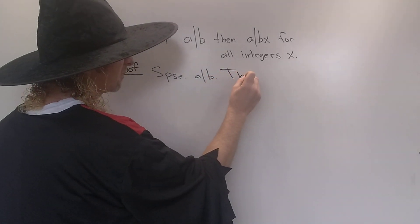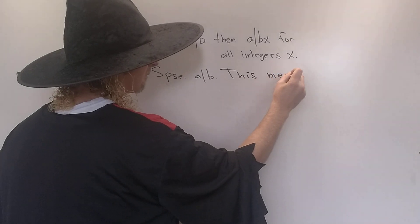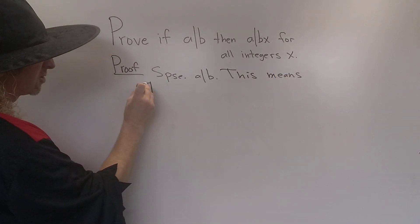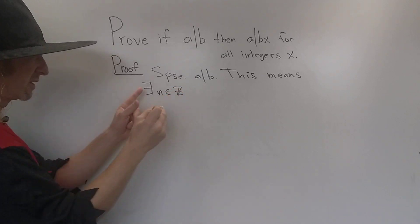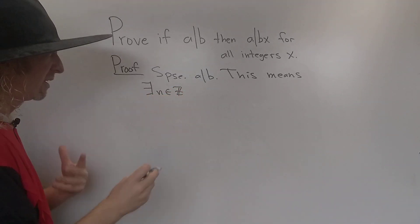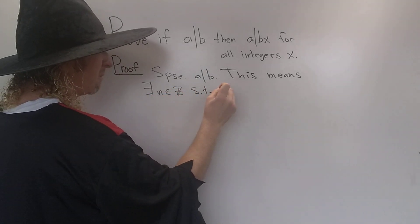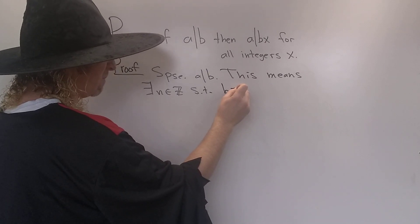So this means there exists an integer n. There exists an n in the set of integers, such that b is a multiple of a. So b equals na.